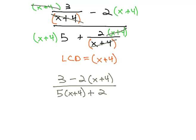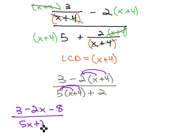We can continue simplifying this expression by distributing, and we get 3 minus 2x minus 8 over 5x plus 20 plus 2.